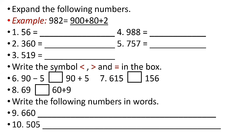So how are you going to expand that number? You have to write 50 plus 6. How about number two, 360? You have to write it this way: 300 plus 60 plus 0. How about number three, 519? That is 500 plus 10 plus 9. Here 9 is in the ones place and 10 is in the tens place.